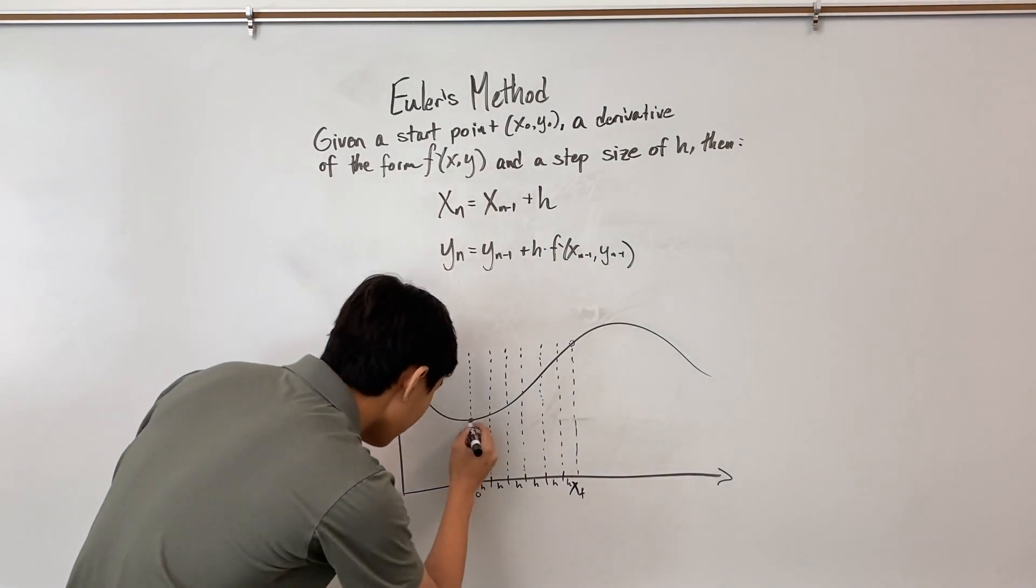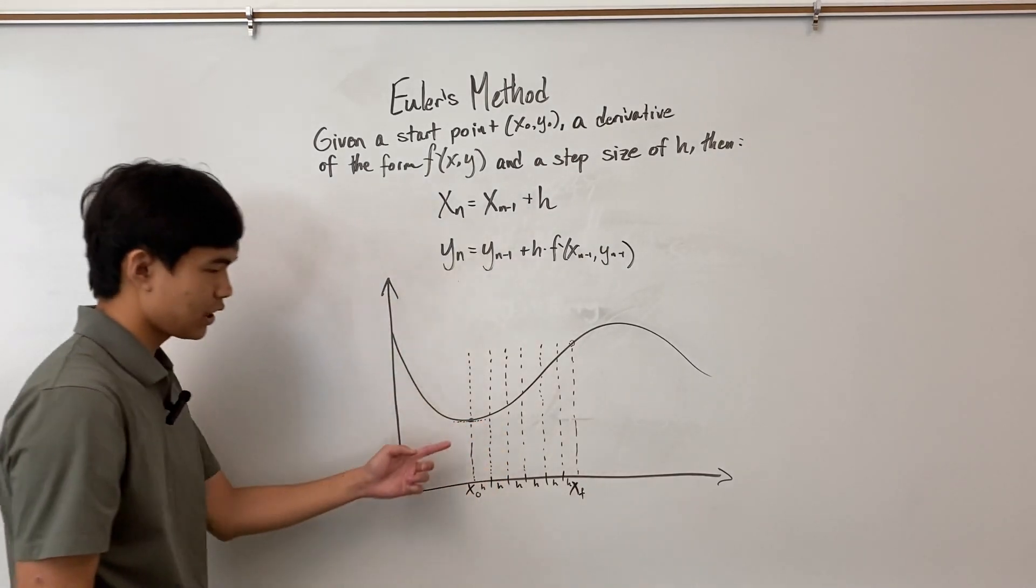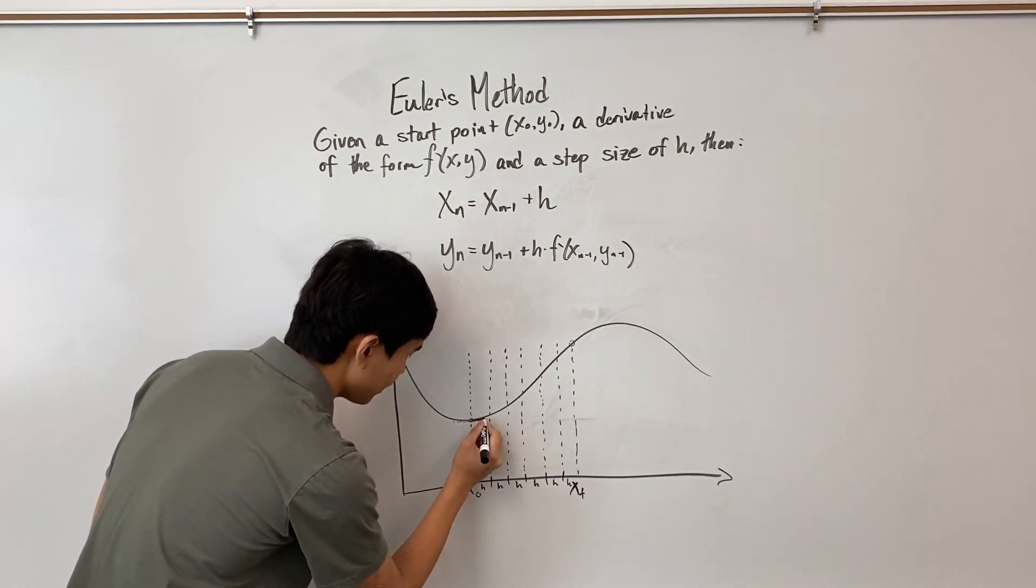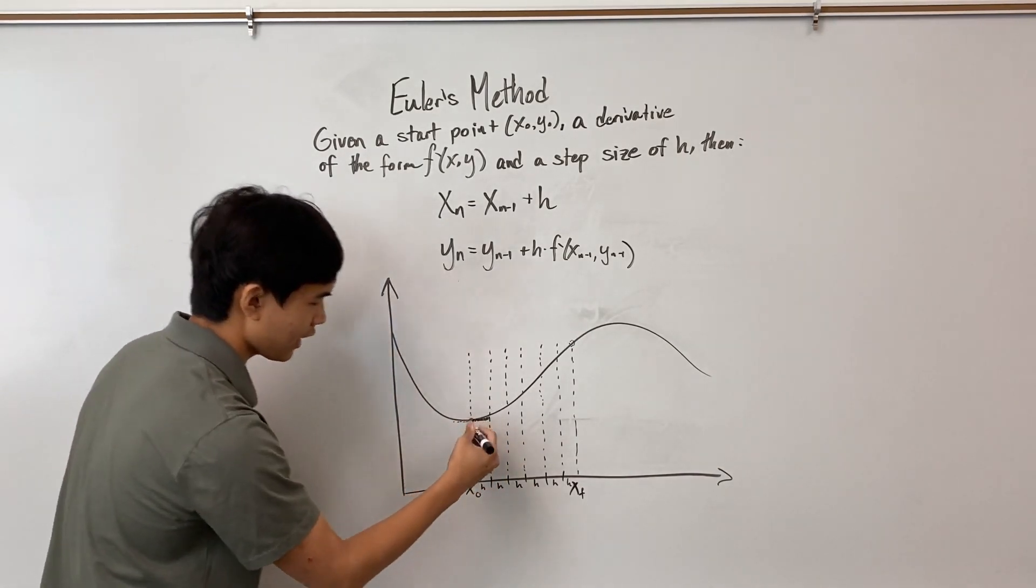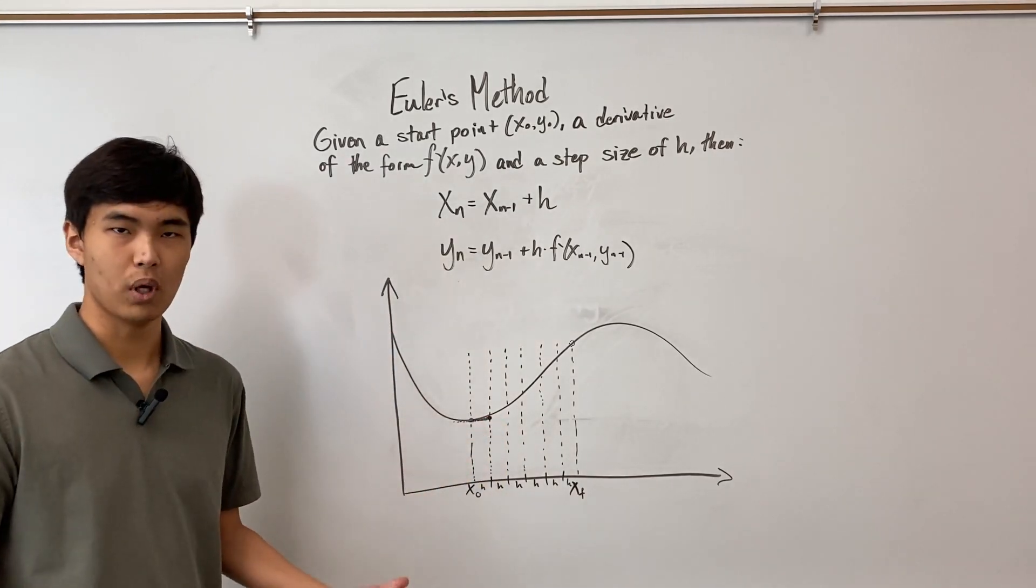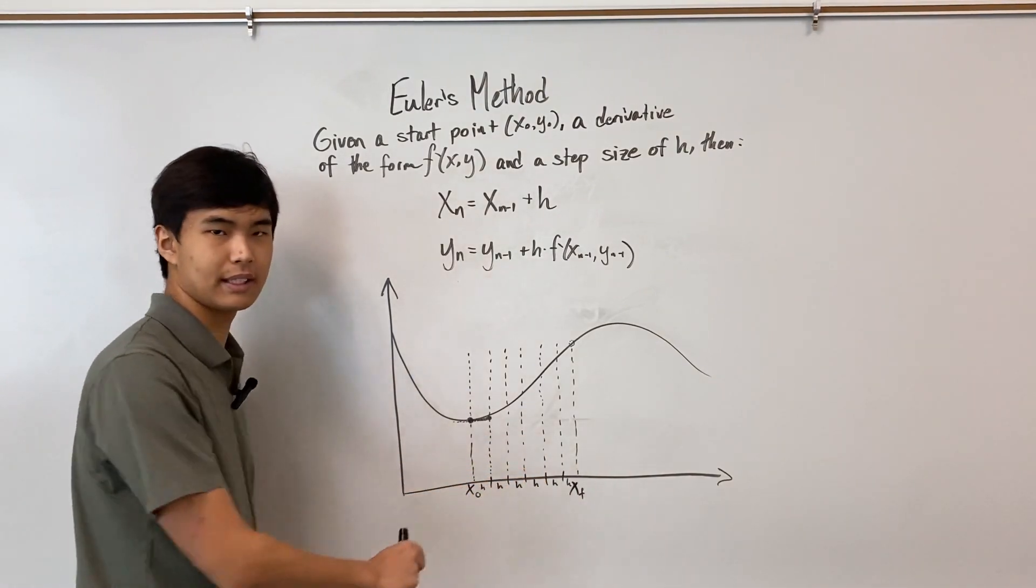For here, the tangent line is something like this. So we're going to go along the tangent line until we get to this x coordinate. And then this is our y₁. And after that, it's just a matter of repetition until we get to x final.